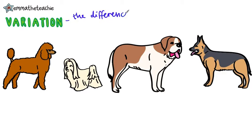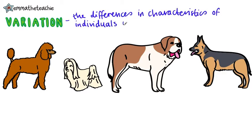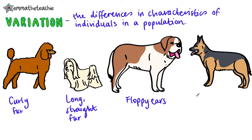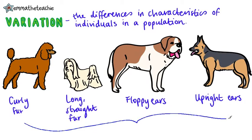Variation is defined as the differences in characteristics of individuals in a population. This is a definition you should learn. For example, poodles have got curly fur, while Maltese have long straight fur. St. Bernards have floppy ears, while German Shepherds have ears that go really pointy and upright. These are all examples of variation within dog populations.